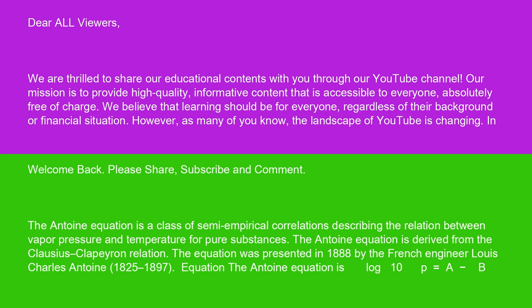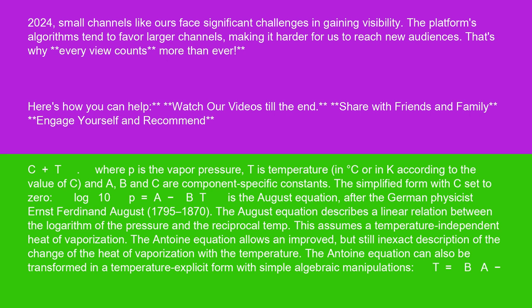The Antoine equation is log 10p equals a minus b over c plus t, where p is the vapor pressure, t is temperature in degrees C or K according to the value of c, and a, b and c are component-specific constants.